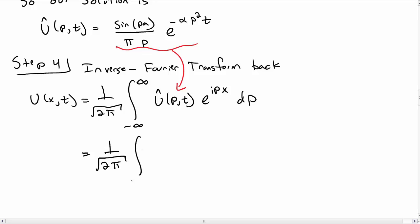So we need to plug this into u hat. And so we do that and we get an expression for the inverse Fourier transform, which looks something like this, e to the minus alpha p squared t, e to the i px dp.